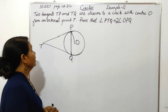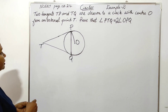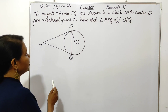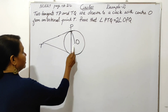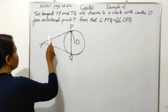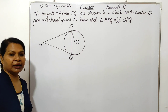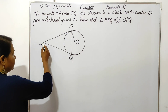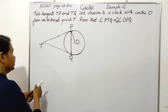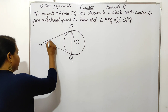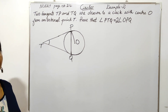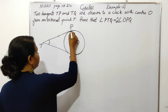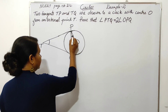This is the question. Two tangents TP and TQ are drawn to a circle with center O from an external point T. Prove that angle PTQ is equal to 2 angle OPQ.